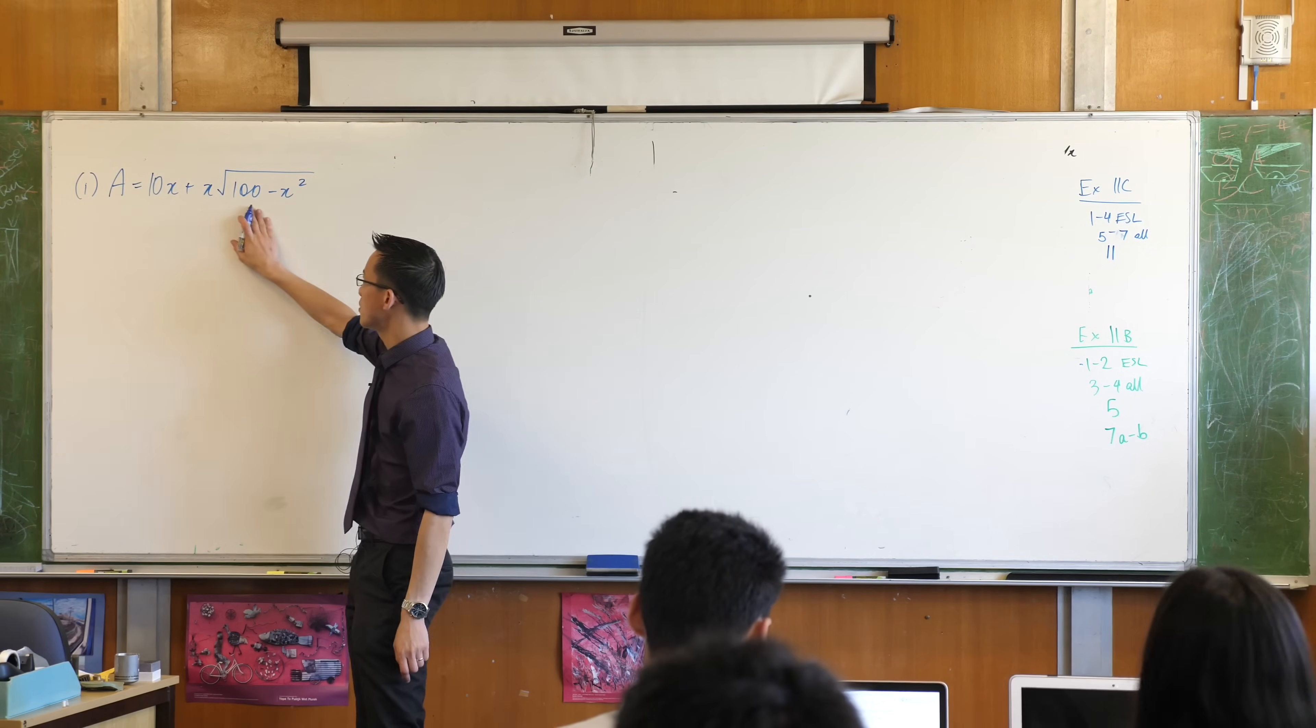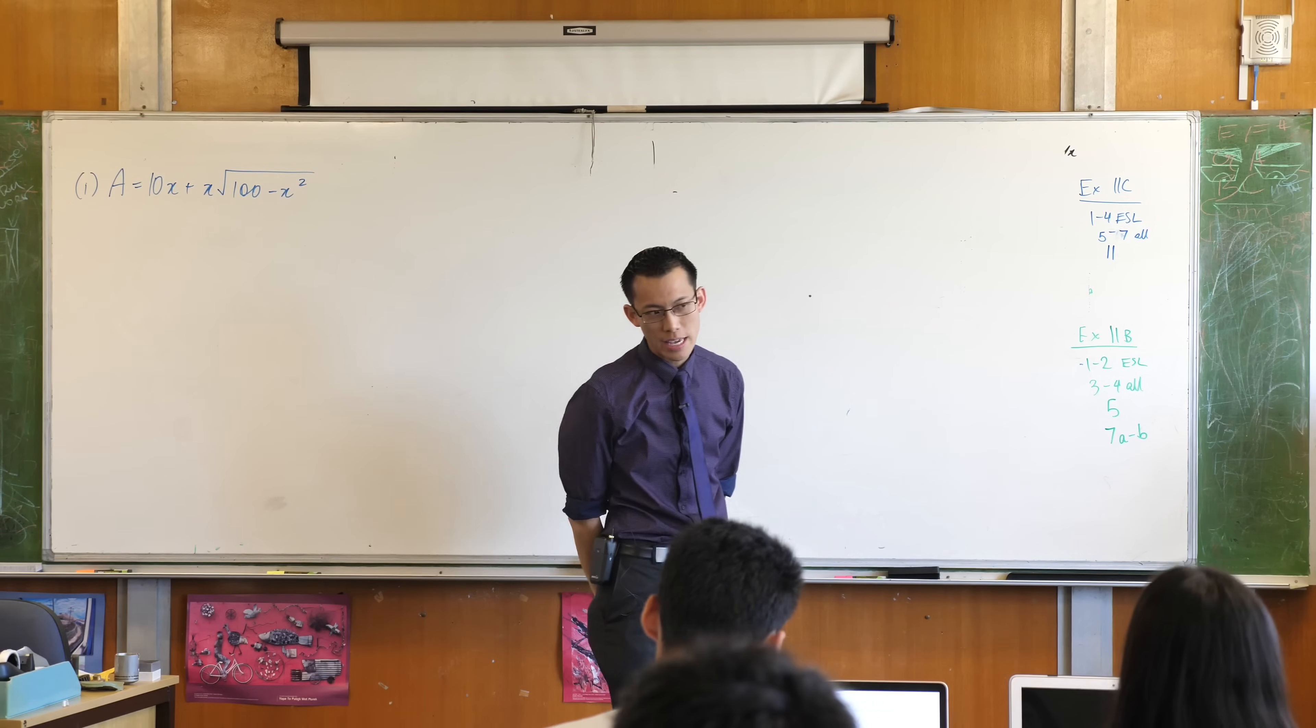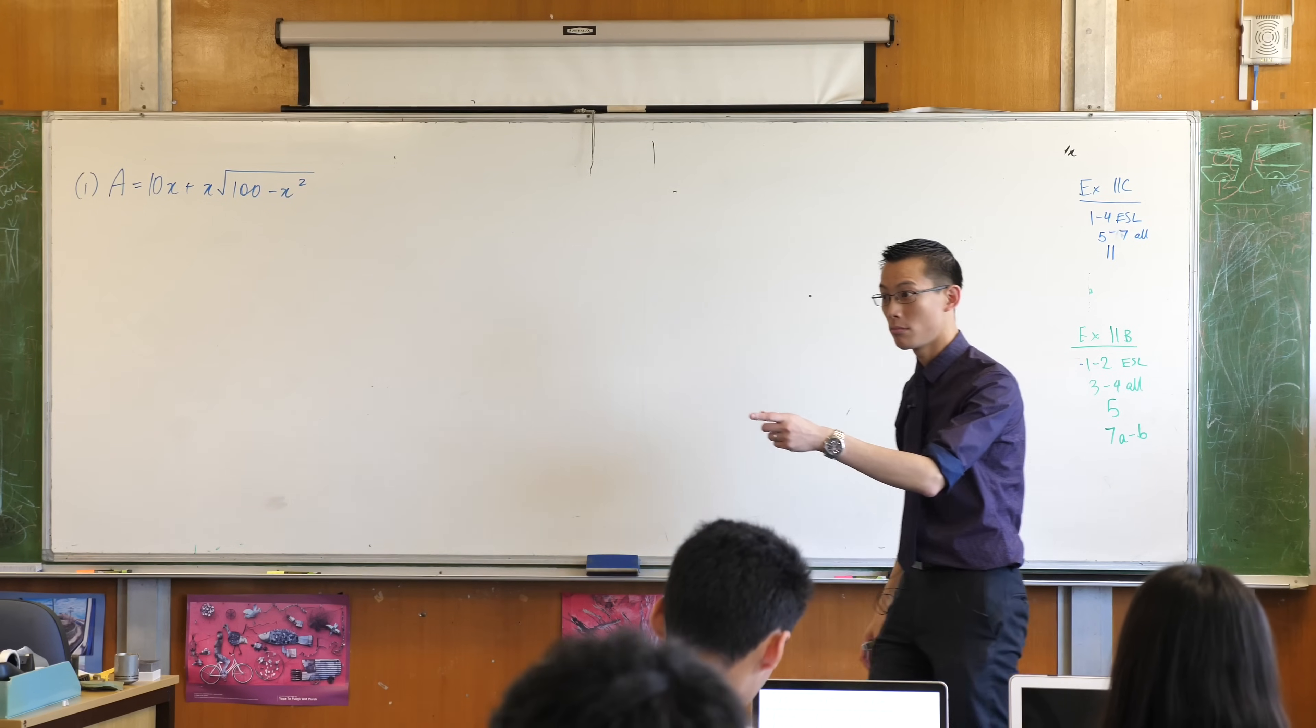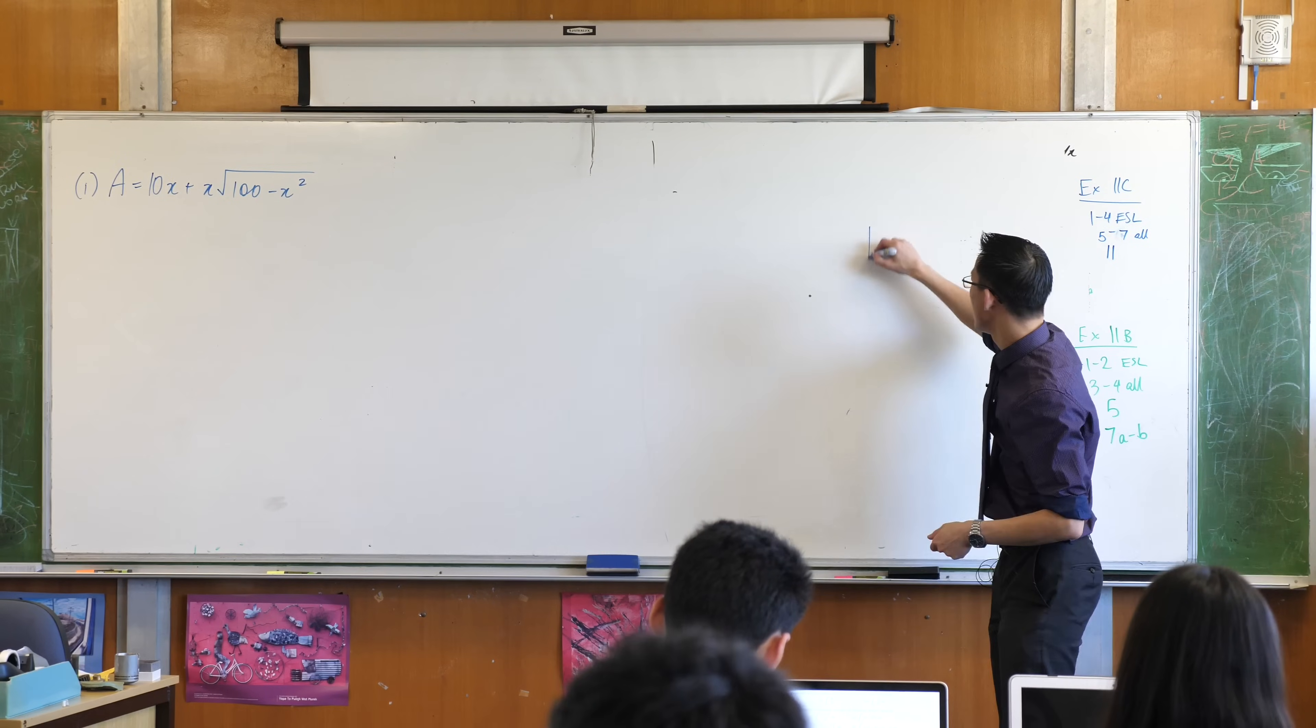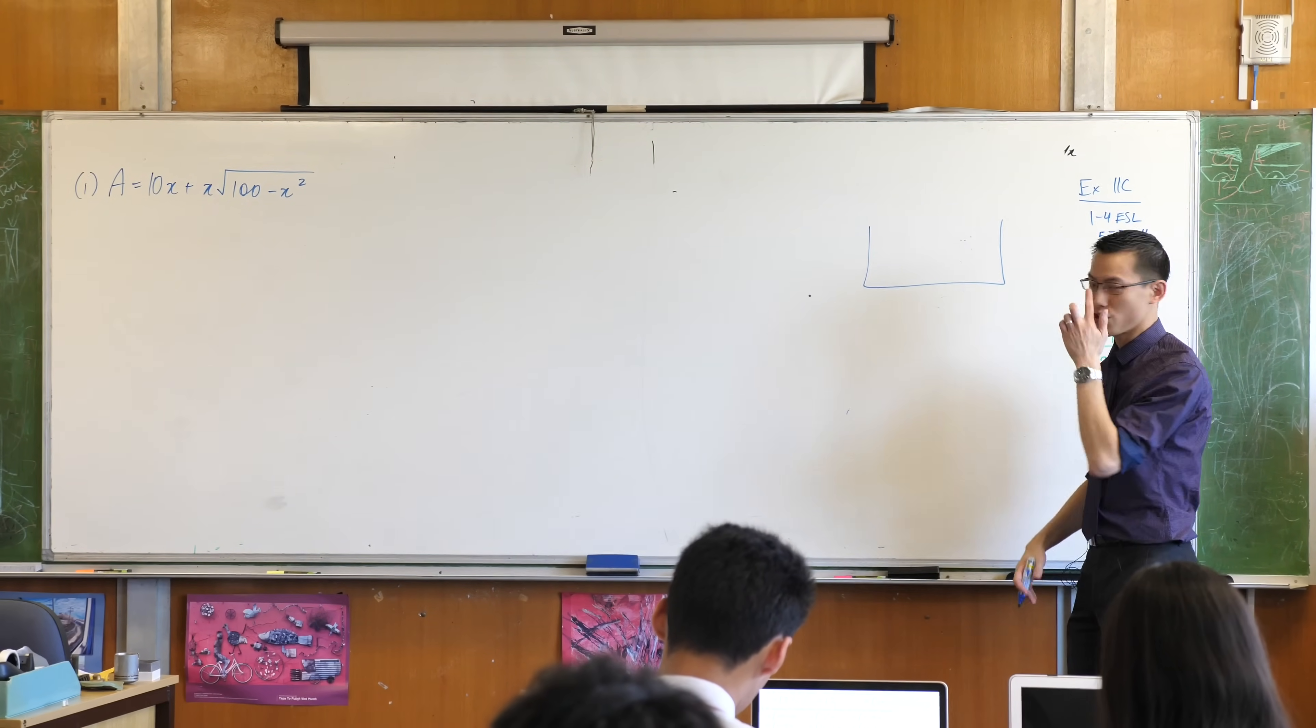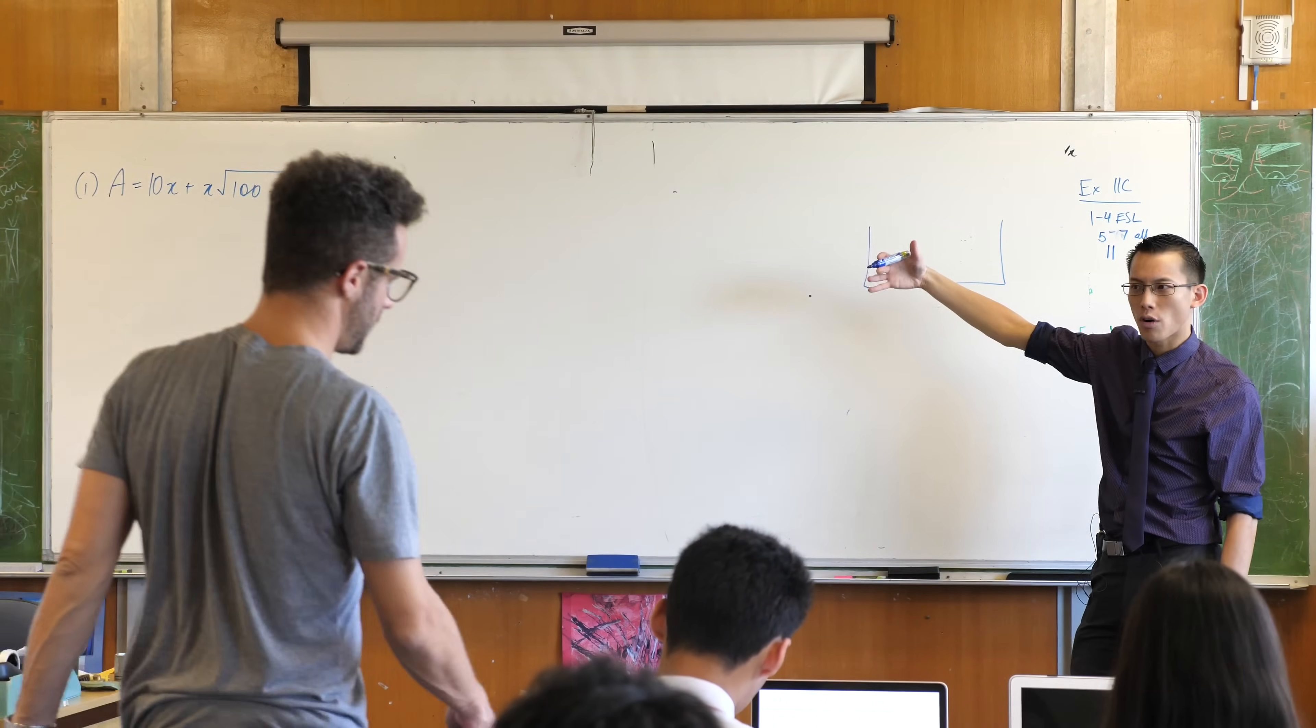Where does this expression come from? It has some very particular pieces to it. The 10x, that's the easiest bit. What does that represent on the diagram? Will? There's a rectangle, right? So your structure here has the rectangular bit down the bottom, it's just got a width and a height, and then what about this other bit hanging out with the square root? Where's that from?